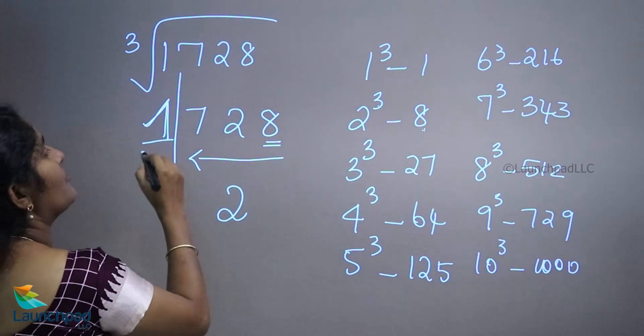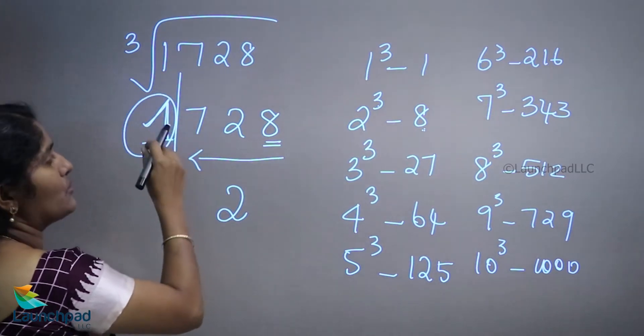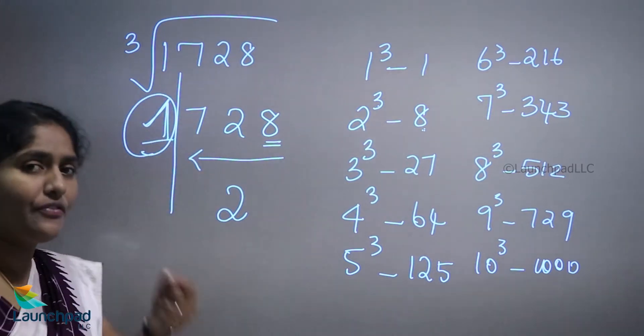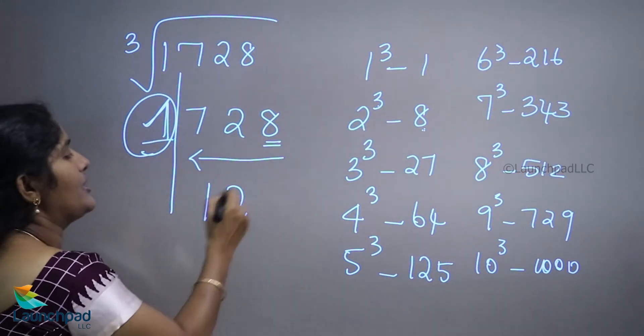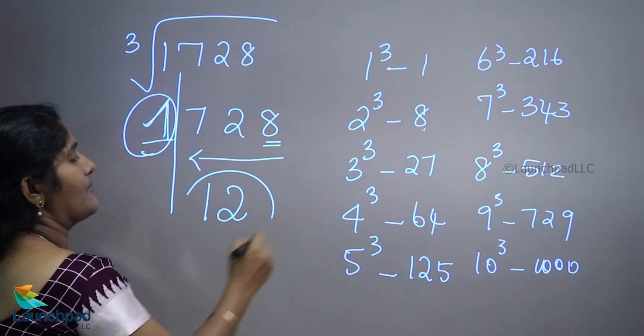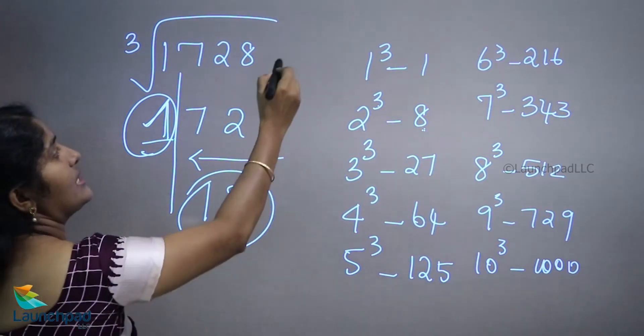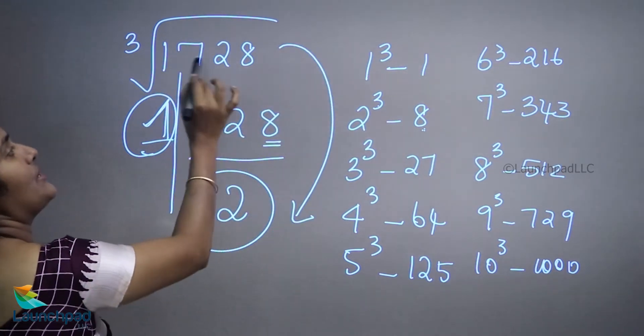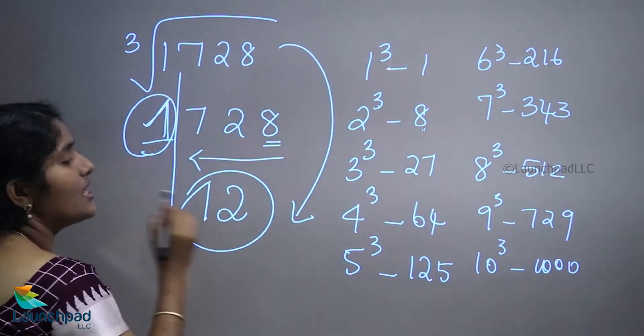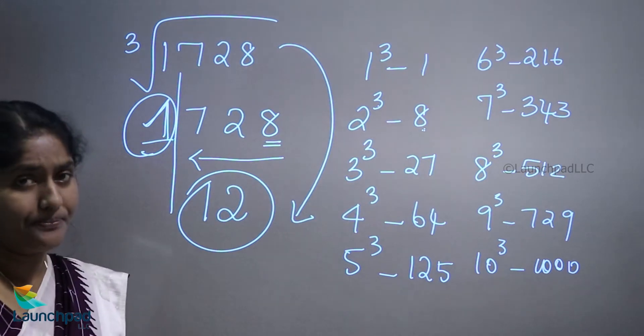What is the perfect cube root of the second part? That is 1 — and 1 cubed equals 1. So the cube root of 1728 is 12.